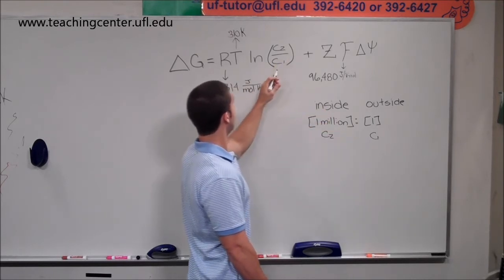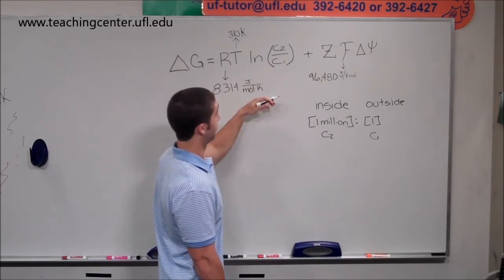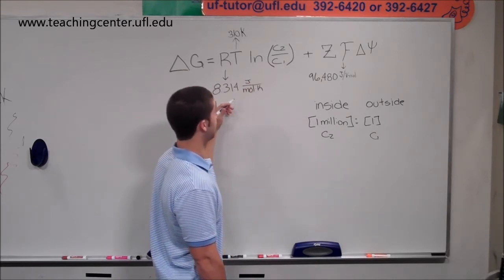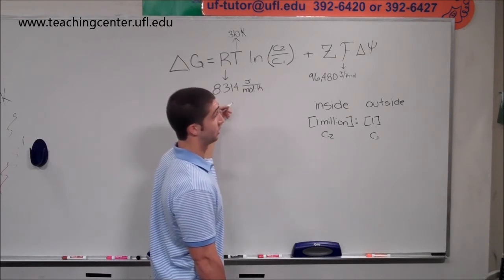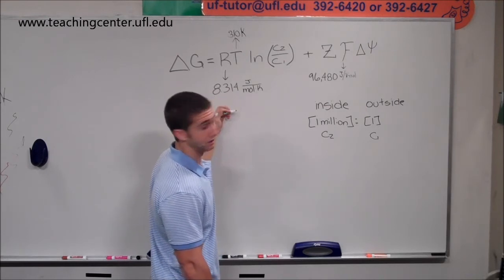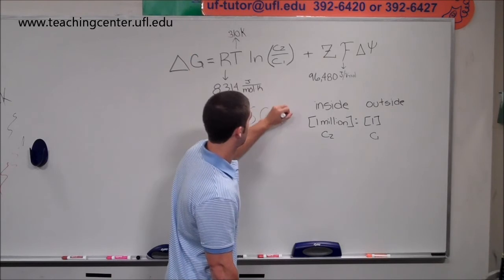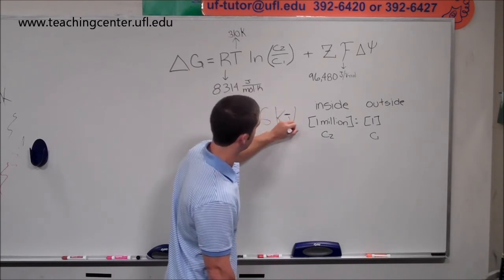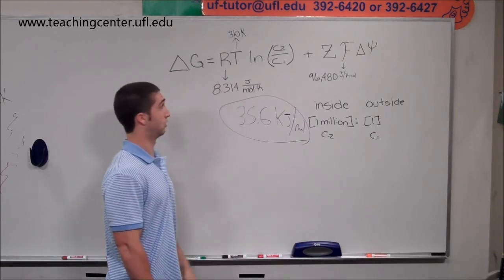So you're going to have one million over one times all this. And your final answer, when you plug all that in, it's going to be in joules. And so you've got to convert that to kilojoules, is what they want as the answer. So you just divide by 1,000. And the final answer is going to be 35.6 kilojoules per mole. And that is the answer to part A of this question.